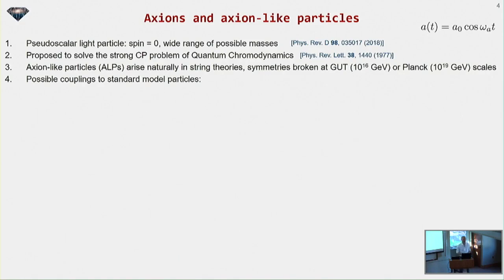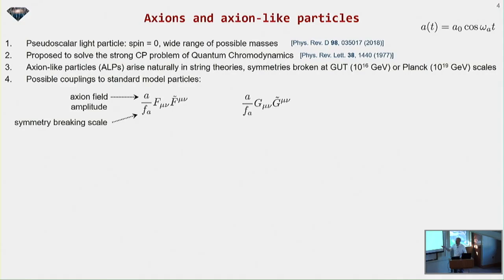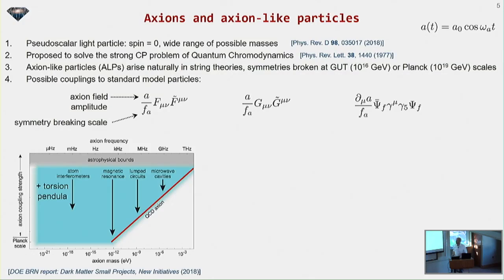The great thing about axions is there are actually very few couplings they can have with standard model particles. One is the interaction with the electromagnetic field, where A is the axion field varying in time and F_A is a symmetry breaking scale, some large energy scale. There's an interaction with the gluon field - this is the actual interaction that solves the strong CP problem of QCD. And there's a third interaction, the so-called axion wind. There is a lot of experimental effort trying to search for axion dark matter.